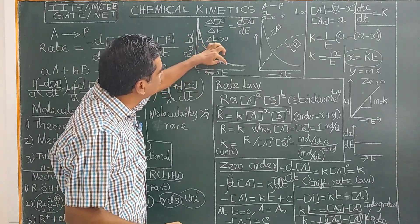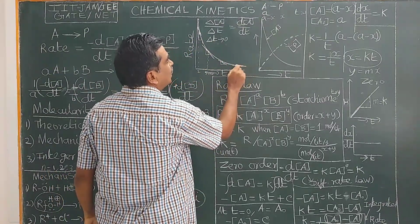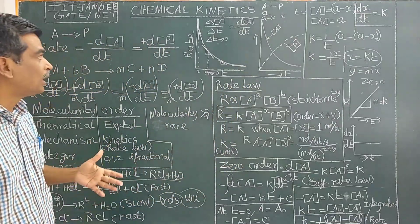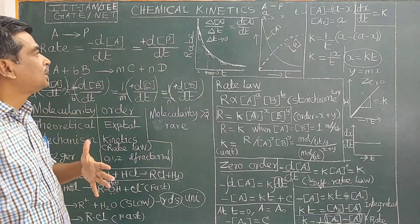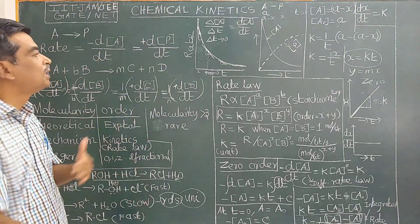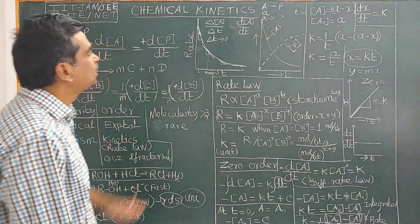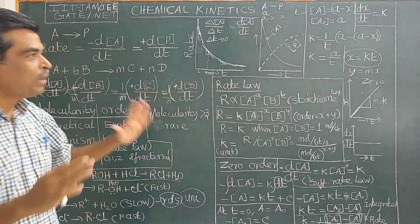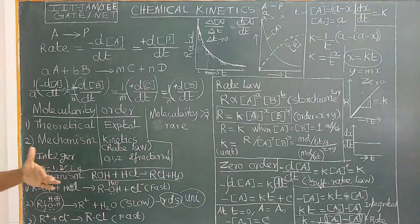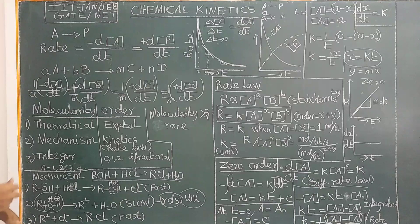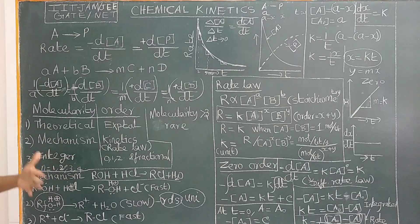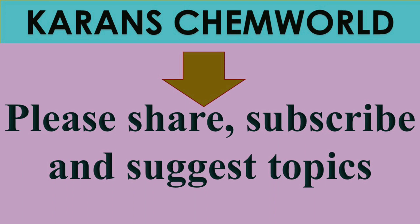After a long time, the rate becomes zero because all the reactants are converted into product. Competitive examination questions are asked based on this. If you understand the basic concept, you will be able to solve most of the questions asked in competitive examinations. Thank you for watching. We will continue with first order, second order, Arrhenius equation, and also parallel reactions. Thank you.